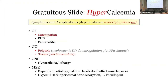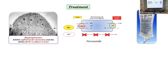Signs and symptoms of hypercalcemia are not highly specific — vignettes may mention constipation, ulcer disease, pancreatitis, or polyuria. Polyuria is important: hypercalcemia causes nephrogenic diabetes insipidus by interfering with aquaporin channel synthesis, similar to lithium toxicity. Hypercalcemic patients can also present with kidney stones, usually in the setting of hyperparathyroidism, and with CNS and musculoskeletal manifestations.